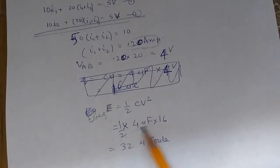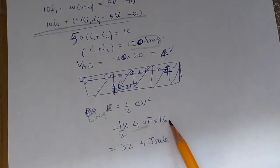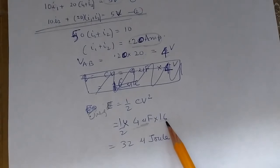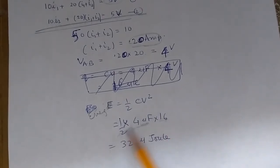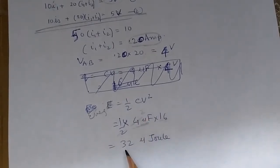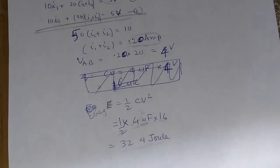Half times the capacitor value of 4 microfarads times V squared. V is 4, so 4 squared is 16. Half times 4 times 16 equals 32 microjoules, because the capacitance is in microfarads.